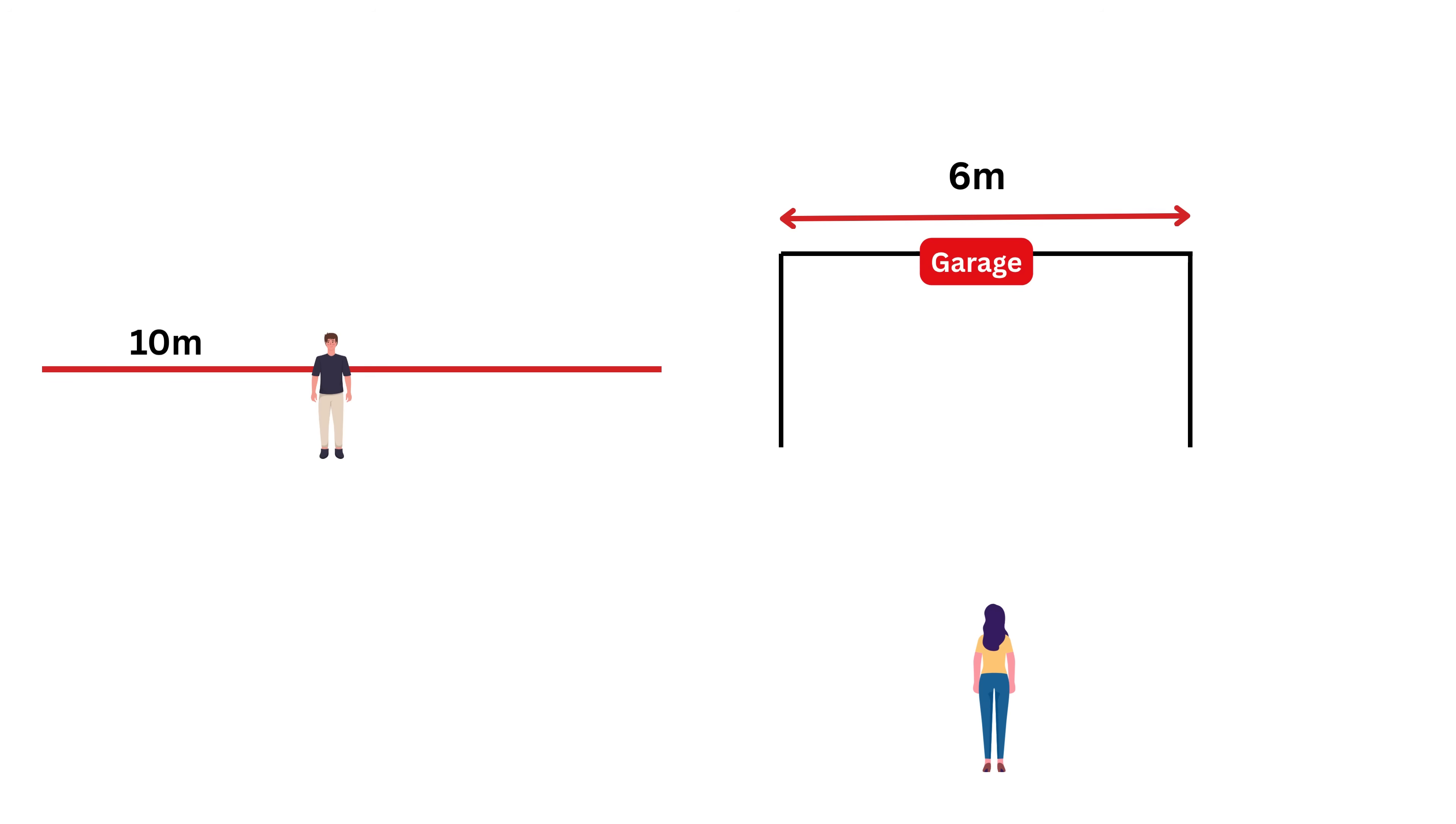Suppose Alice has a garage that is 6 meters long and is at rest with her. Now Bob is carrying a 10 meter long pole with him. Right now everyone is at rest, and this 10 meters is the rest length, or the proper length of the pole, which means the length of the pole measured in the frame where the pole is at rest. In this rest frame, the pole is longer than the garage and there is no way it could fit inside the garage.